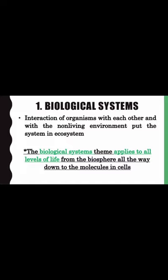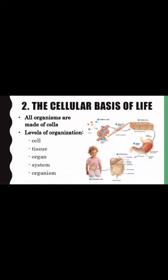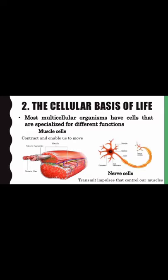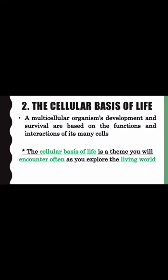Theme 2 — The cellular basis of life: all organisms are made of cells. Levels of organization: cell, tissue, organ, system, organism. Most multicellular organisms have cells specialized for different functions — muscle cells contract and enable us to move; nerve cells transmit impulses that control our muscles. A multicellular organism's development and survival are based on the functions and interactions of its many cells. The cellular basis of life is a theme you will encounter often as you explore the living world.